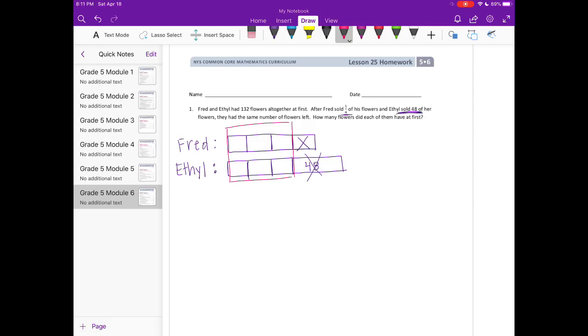Let's draw one tape diagram that combines Fred and Ethel and their flowers at the beginning when they had 132 flowers together at first. So I'm going to have one, two, three, four, five, six, seven boxes plus the 48. This will represent 48. I don't know if they're even or if the 48 needs to be larger because we don't know what numbers are going to go in these boxes.